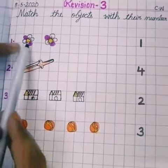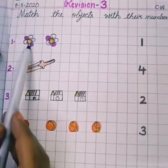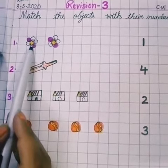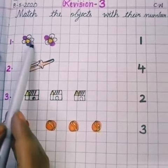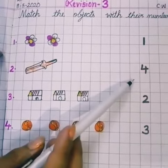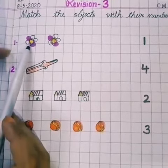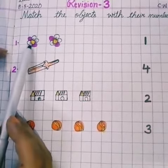First, how many flowers are there? Count it. First, you have to count the picture, then match it with their number. Okay, how many flowers are there? Count it, 1 and 2.